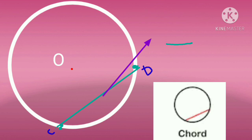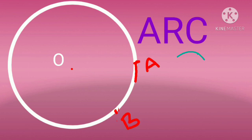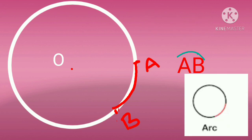The next part is arc. A portion of the circle is an arc. An arc is represented by a special symbol. In this circle, points A and B are on the circle, and the curved portion between them is called an arc, represented as arc AB.